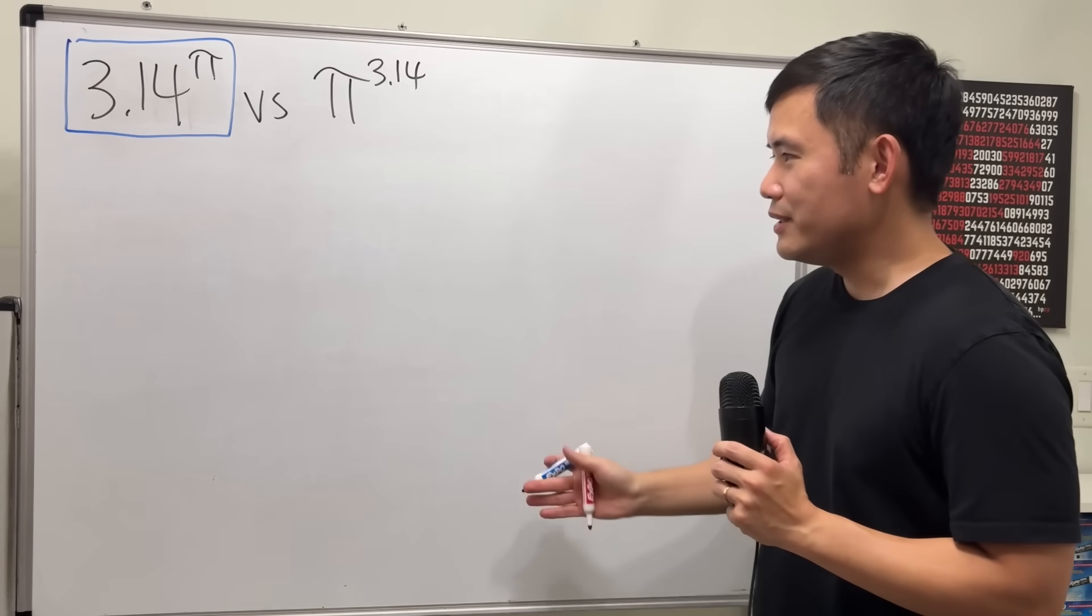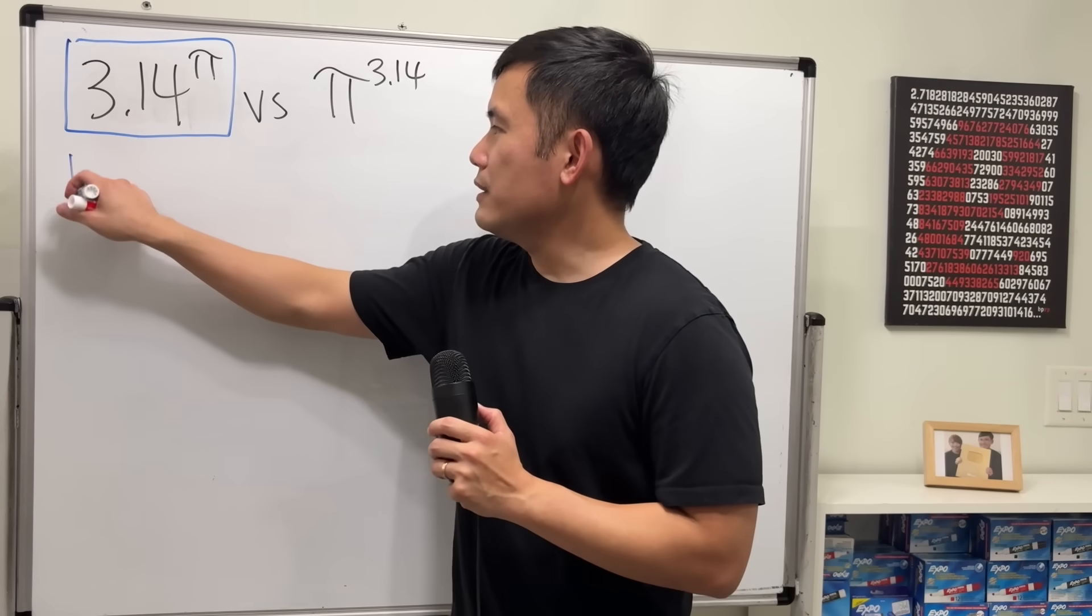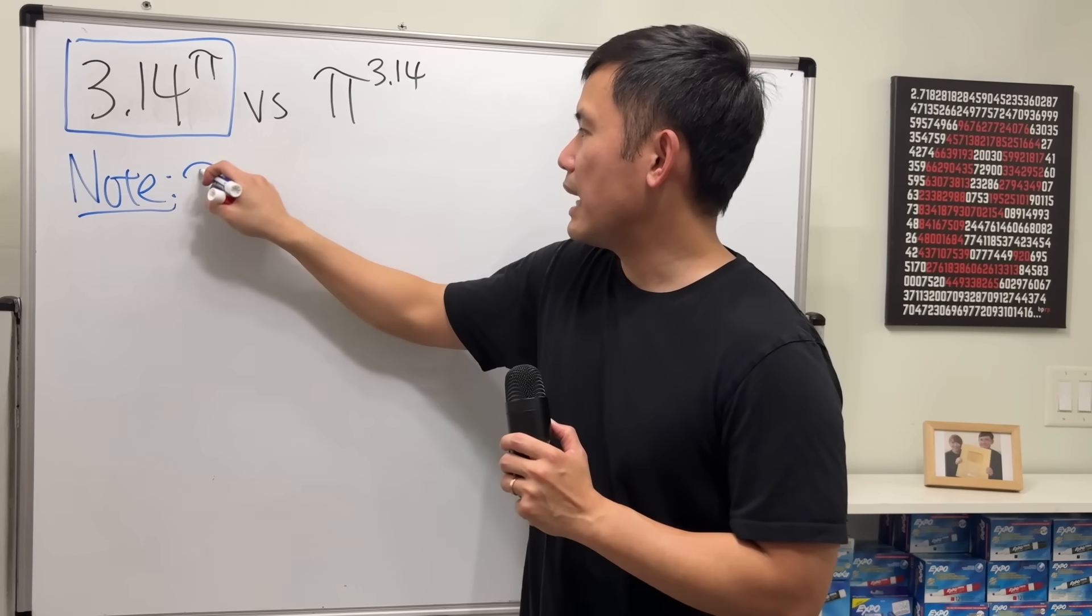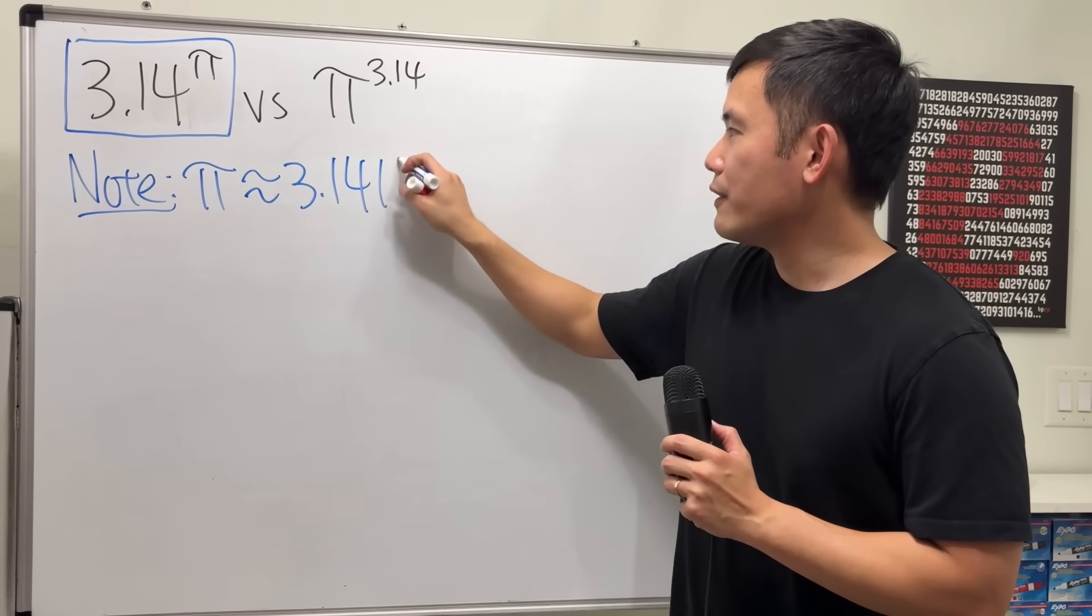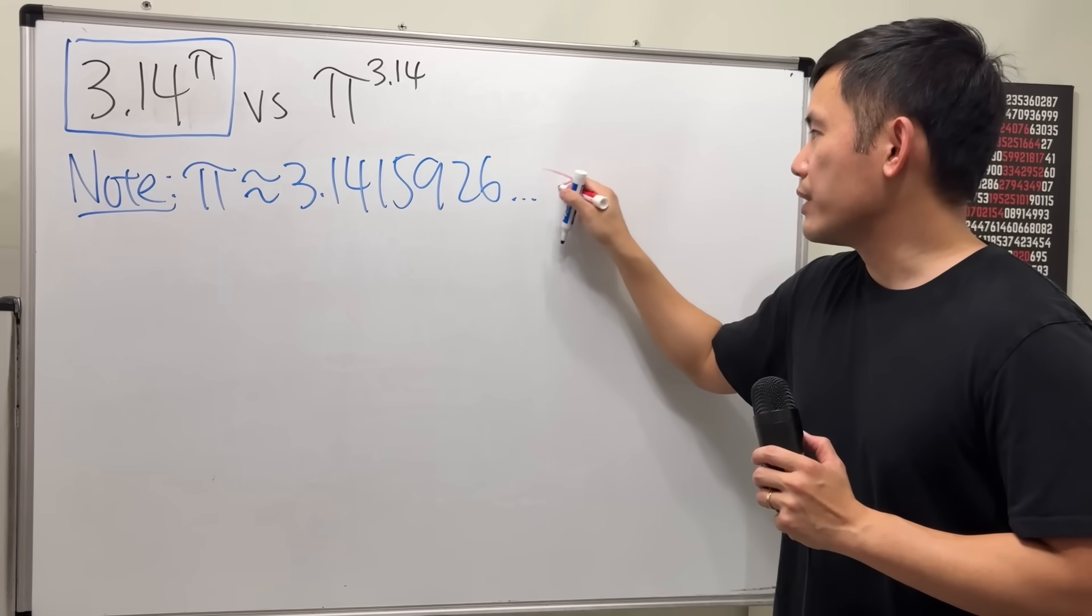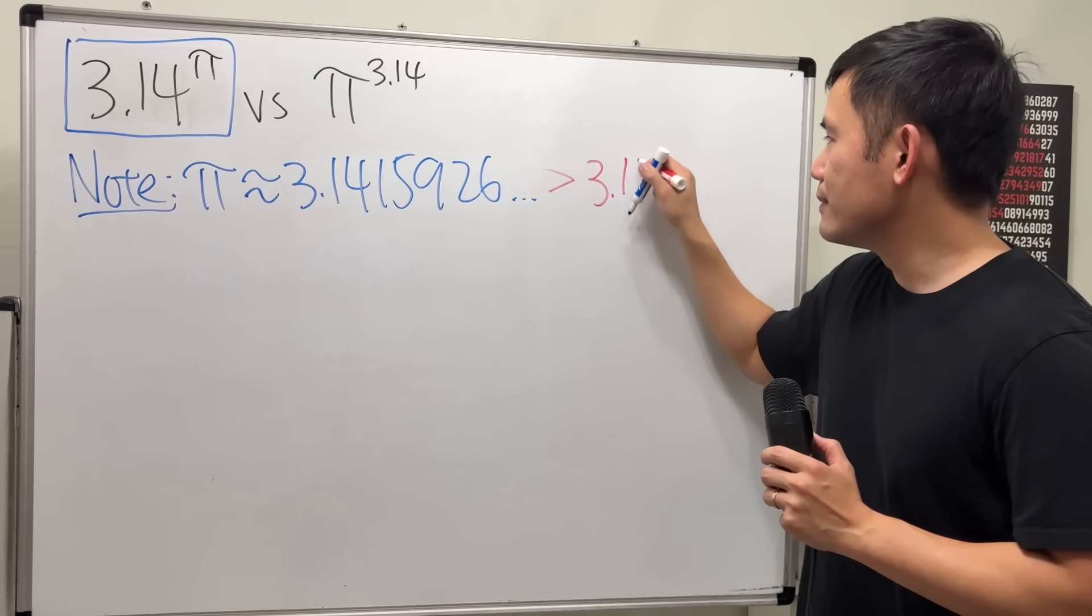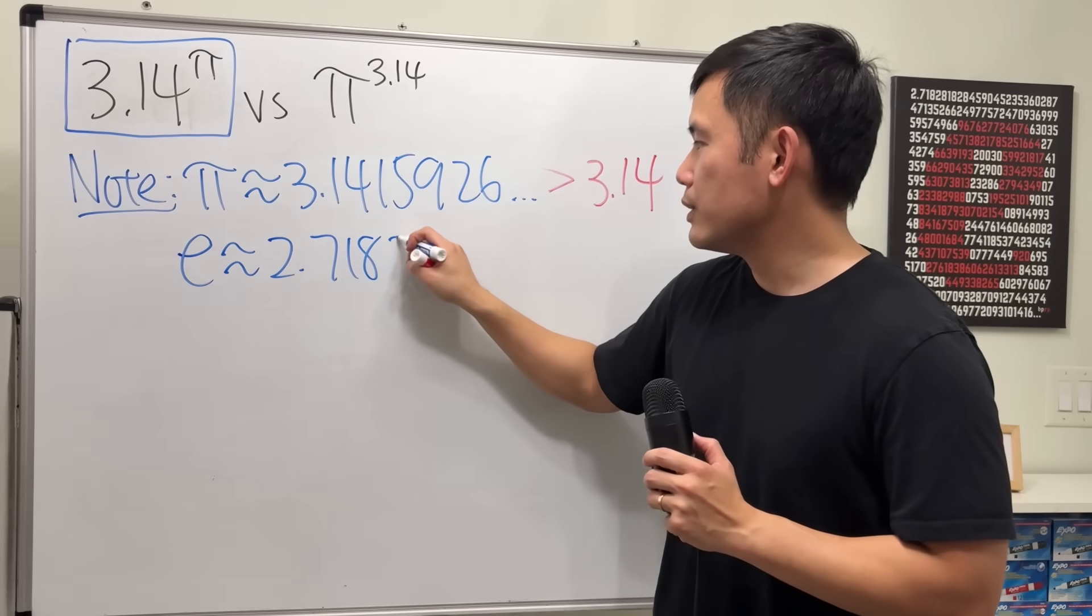Now, let me just write down all the details for you guys. And of course, I will also show you the proof of this. So firstly, note that π is approximately 3.1415926 and so on, which is greater than 3.14. And then e is approximately 2.71828.